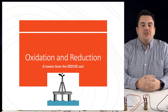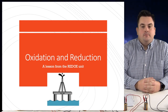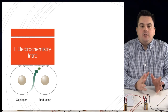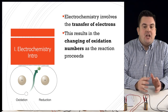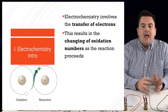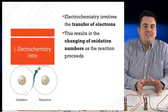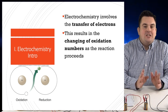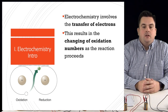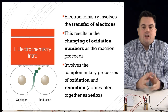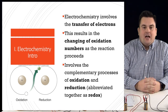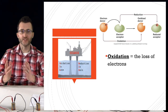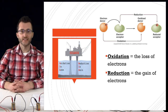Oxidation and reduction: a lesson from the redox unit. Electrochemistry involves the transfer of electrons, which results in the changing of oxidation numbers as the reaction proceeds. Remember, oxidation numbers can be found in the upper right for each element on the periodic table. Electrochemistry involves the complementary processes of oxidation and reduction, abbreviated together as redox.